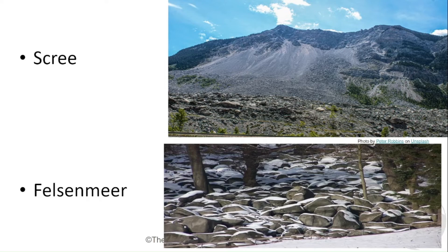Here we can see two types of rock that come off from freeze-thaw weathering. We can see scree slopes, which are primarily made up of lots of small sediments across a large area, and then Felsomere, which is broken up into bigger chunks — we can see the very distinctive rocks there, coated with snow.